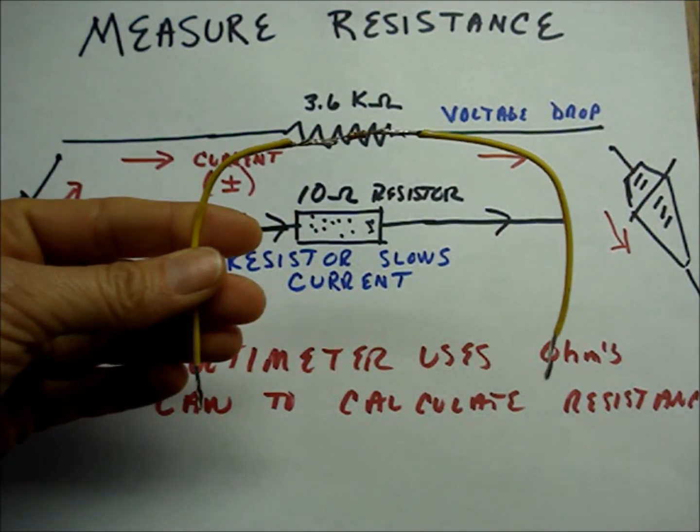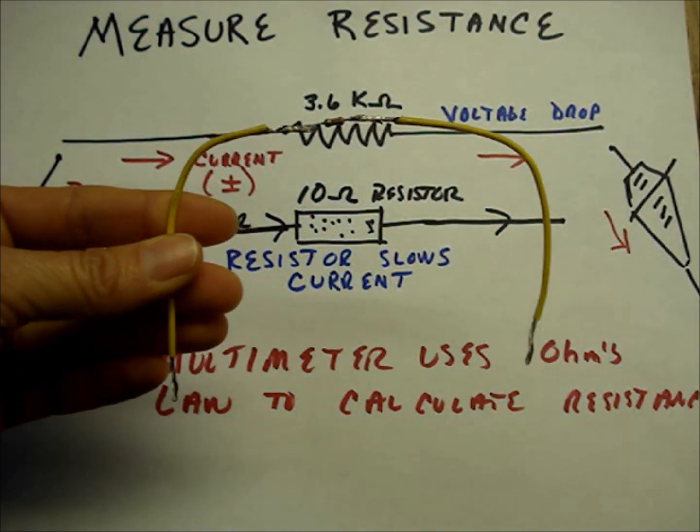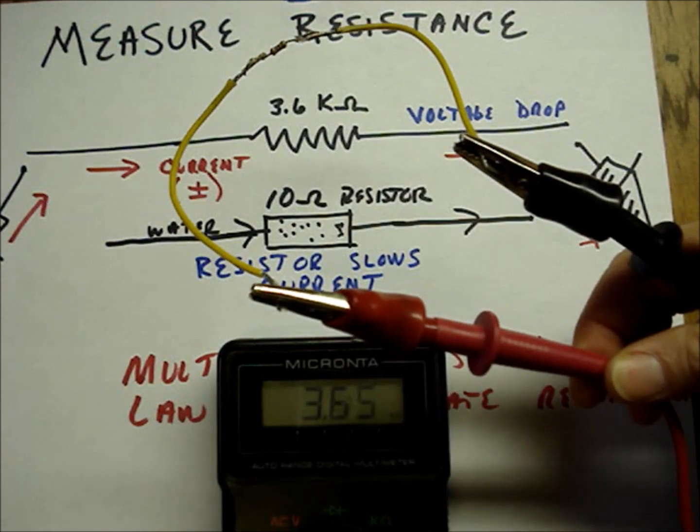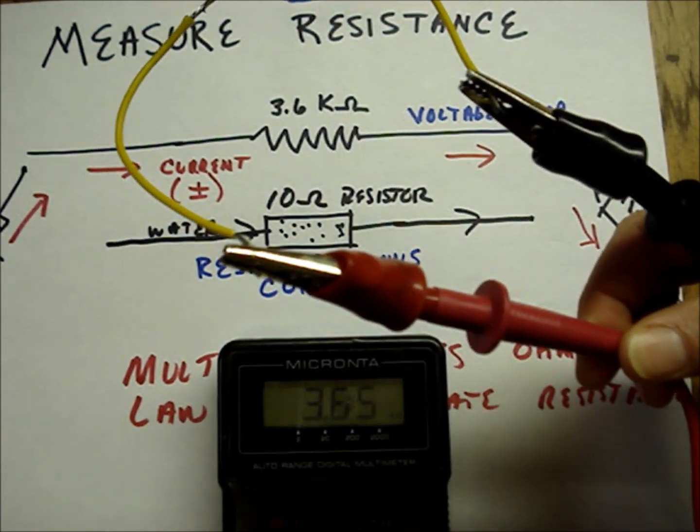I've soldered a 3.6 kohm resistor on two pieces of wire. When I clip my leads on either end of the wire, I read, as expected, about 3.6 kohms.